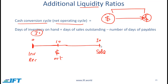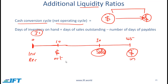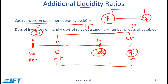On average, let's say it takes 15 days to collect money. This sale is a credit sale and on day 45 is when we receive money. The net operating cycle or the cash conversion cycle is the time period from the payment date to the cash receipt. Days of inventory on hand is 30, days of sales outstanding is 15, minus number of days of payables which is 10. So the cash conversion cycle is 45 minus 10, which is 35. You get the same answer using the formula: 30 plus 15 minus 10 equals 35.